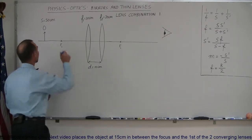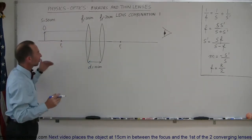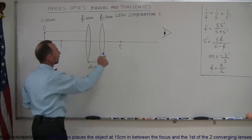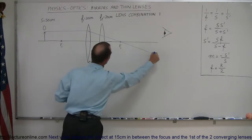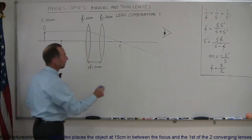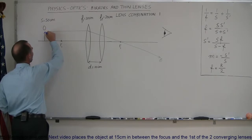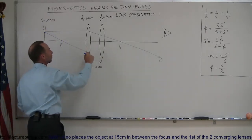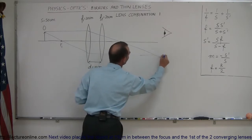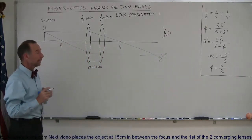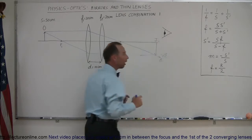We draw our first ray from the top of the object to the first lens, and at that point the ray is going to be diverged — changed in direction to hit the focal point of the first lens. So the ray will diverge, go through the focal point, and continue on. Now we draw the second ray, which will go through the focal point in front of the lens, continue on until we hit the lens, and at that point it will continue on parallel to the normal. Where those two rays meet will be the location of the first image — image one — caused by the first lens.